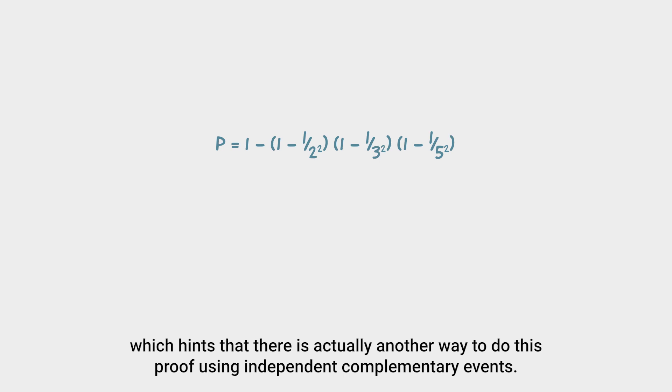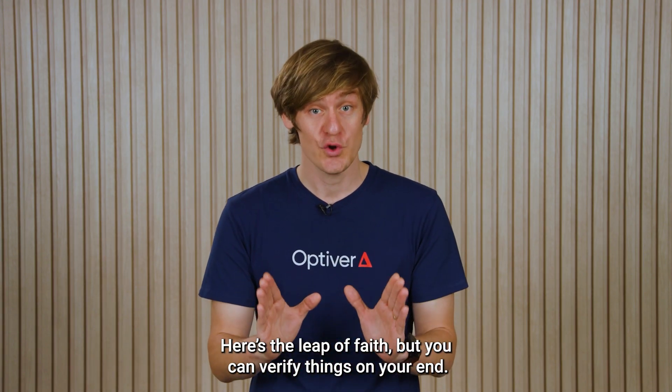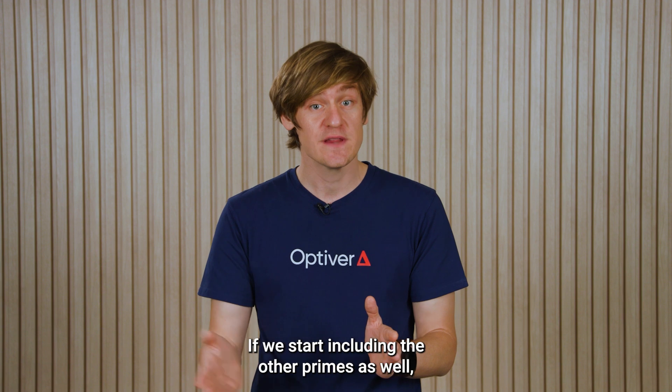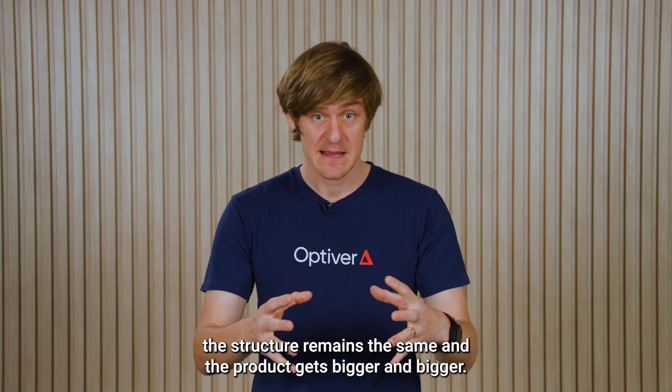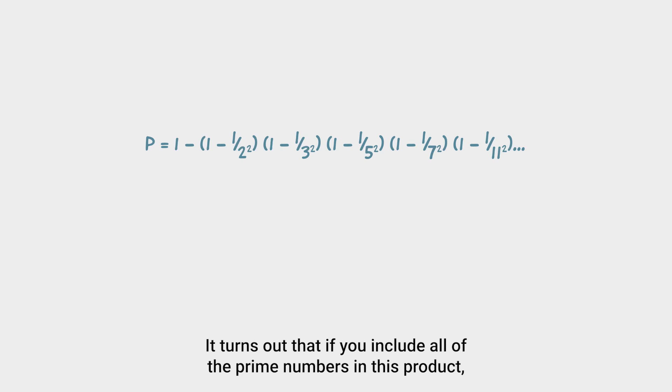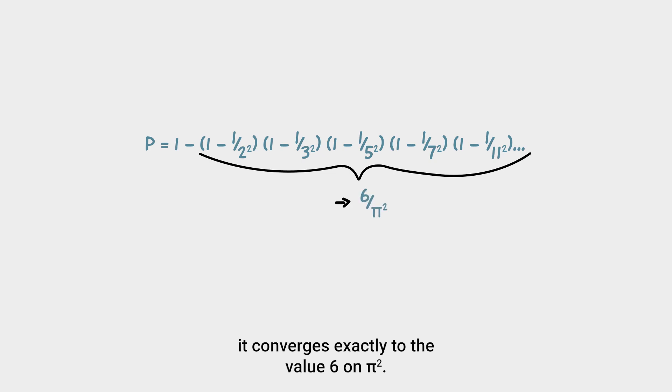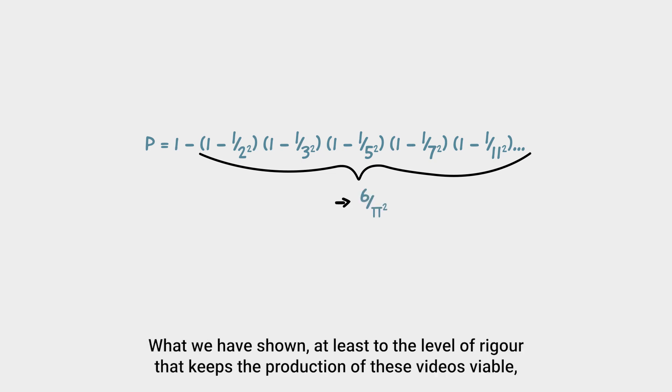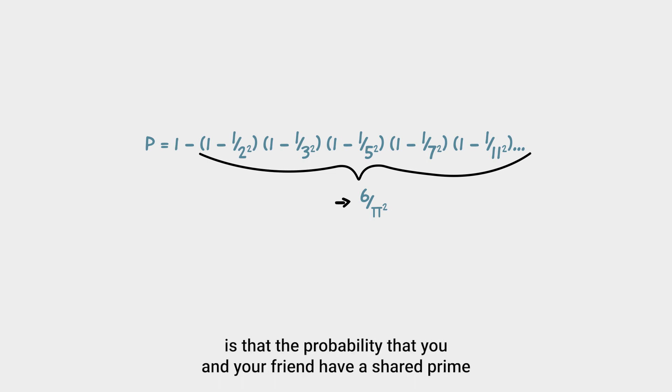which hints that there is actually another way to do this proof using independent, complementary events. Here's the leap of faith, but you can verify things on your end. If we start including the other primes as well, the structure remains the same, and the product gets bigger and bigger. It turns out that if you include all of the prime numbers in this product, it converges exactly to the value 6 on pi squared. What we have shown, at least to the level of rigour that keeps the production of these videos viable, is that the probability that you and your friend have a shared prime divisor is equal to 1 minus 6 on pi squared, which evaluates to about 0.39. So our estimate was actually pretty good.